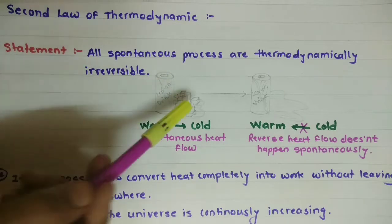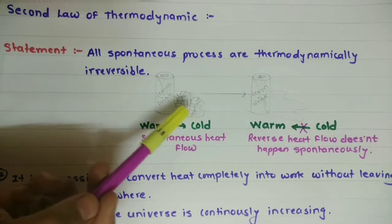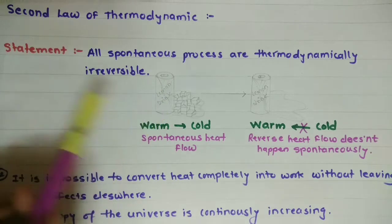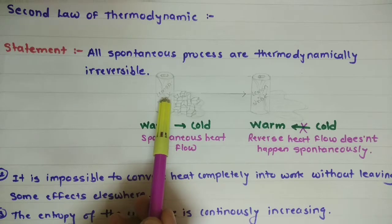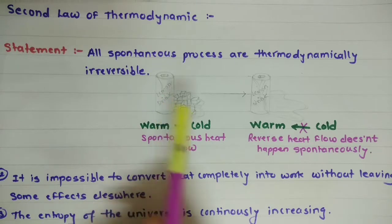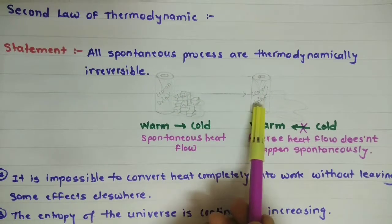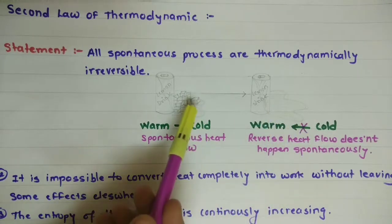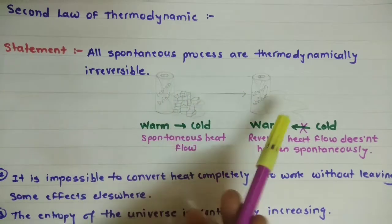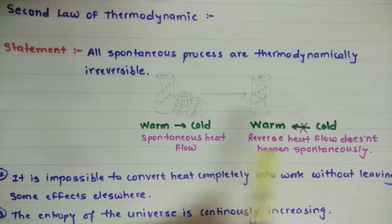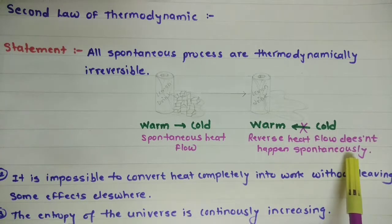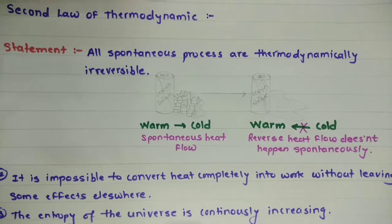The ice is cold and the lemon drink is warm. After putting them together, what will happen? After a certain time, the warmer drink cools down, and the cold ice melts completely. The warm drink becomes cold, but cold never spontaneously becomes warm — that never happens. So the spontaneous heat flow from warm to cold is possible, but the reverse heat flow does not happen spontaneously. All spontaneous processes are irreversible and not reversible.